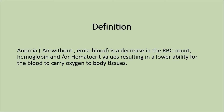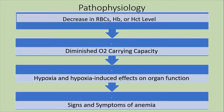What is the definition of anemia? Anemia is a decrease in the red blood cell count, hemoglobin, or hematocrit values, resulting in a lower ability of the blood to carry oxygen to body tissues. This decreased oxygen-carrying capacity leads to hypoxia, which affects tissues and causes the signs and symptoms of anemia.